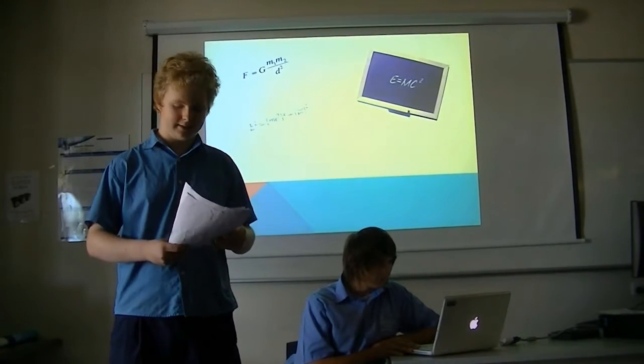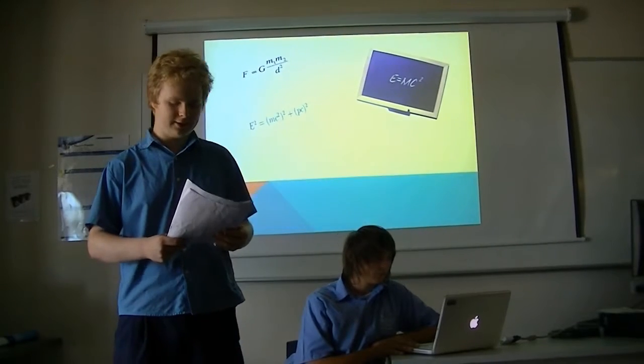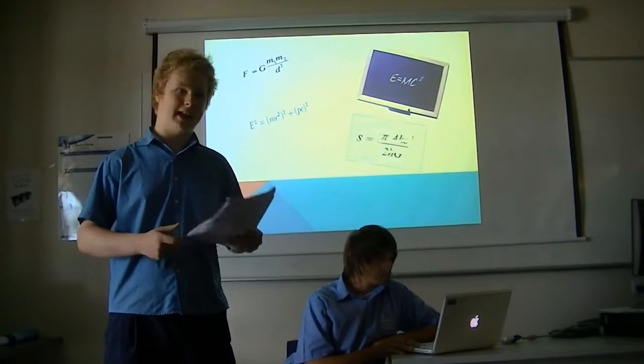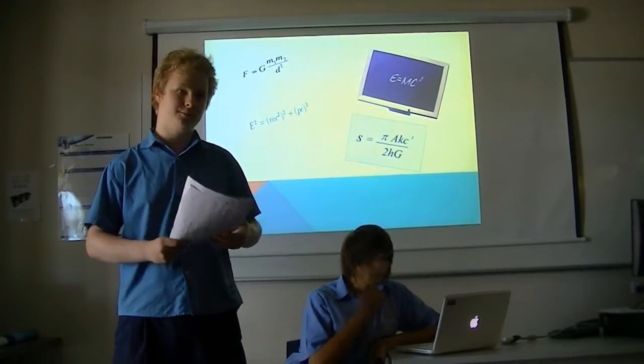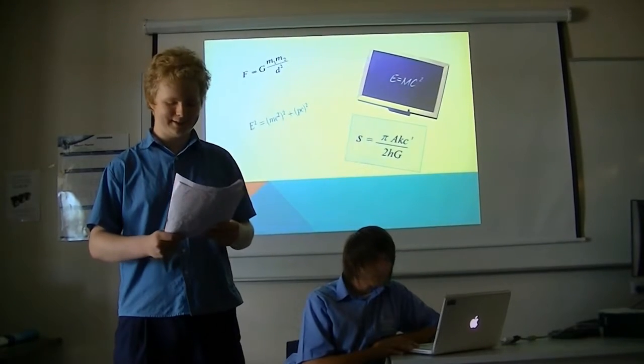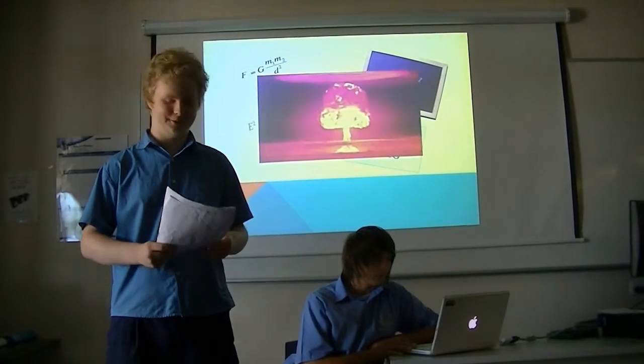Einstein's famous E equals MC squared is what allowed us to create nuclear weaponry. That might not sound like such a great thing, but it was a nuclear weapon that won World War II for the Allies.